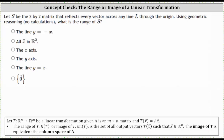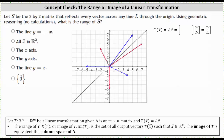Let's first take a look at this geometrically, and assume the line through the origin is the line Y equals X, graphed here in black. The blue vectors are the input vectors in R2, and the red vectors are the images of the blue vectors under the transformation — the output vectors.